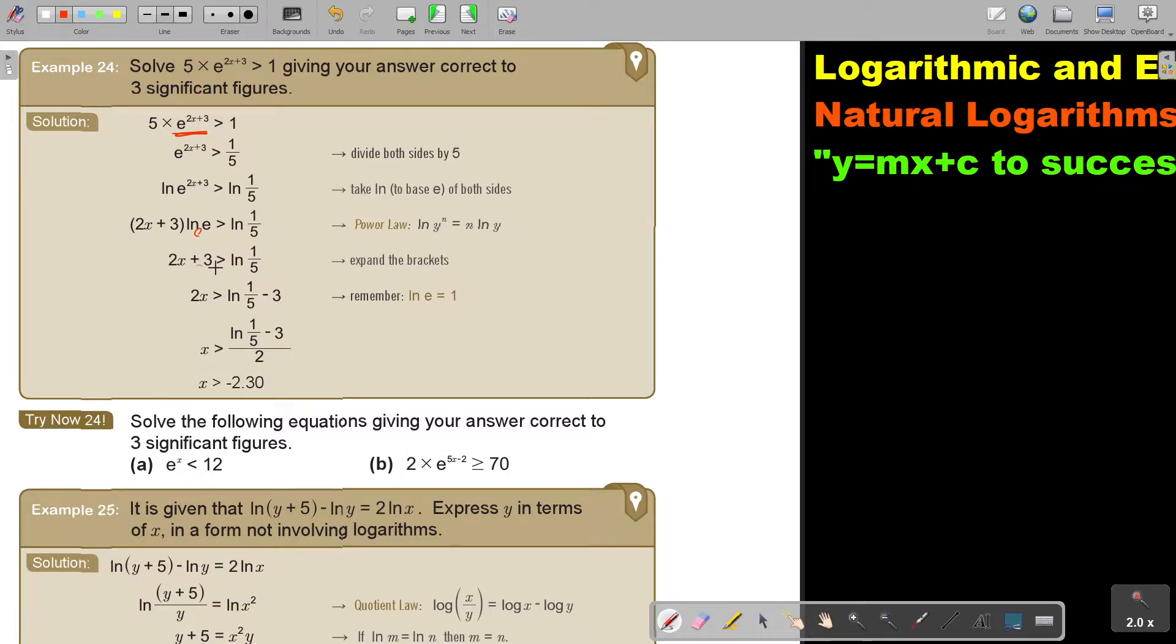And then we're just basically going to subtract 3, divide by 2. So luckily we're not dividing by a negative, so the inequality sign stays the same. And the answer will be x is bigger than negative 2.30, correct to 3 significant figures.